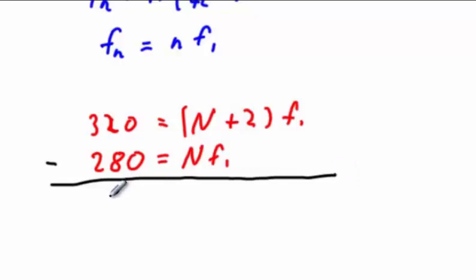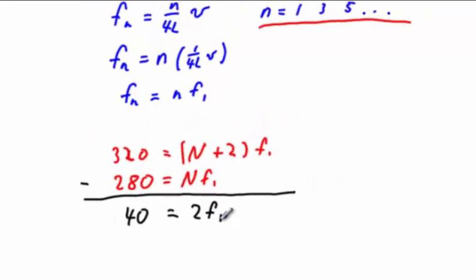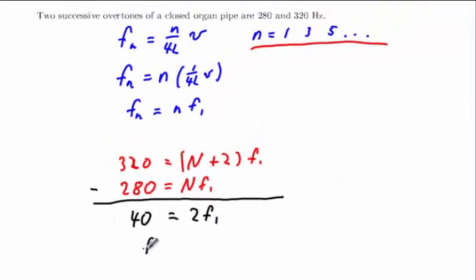320 minus 280 is 40 Hertz, and on the right-hand side what I'll find is that the factor n times f1 will cancel, leaving me simply with twice f1, so that the answer to Part A of this problem is that f1 is equal to 20 Hertz.